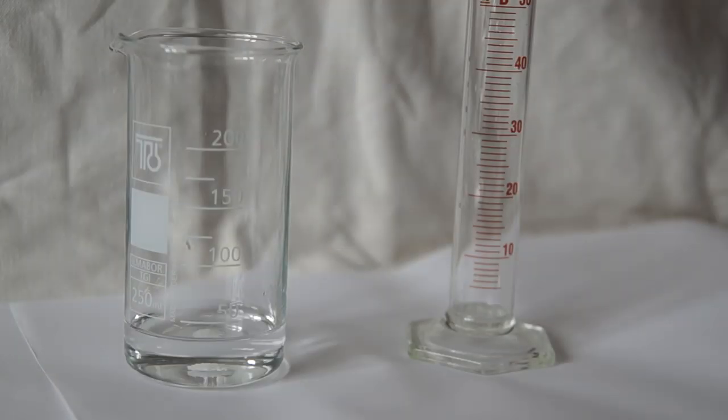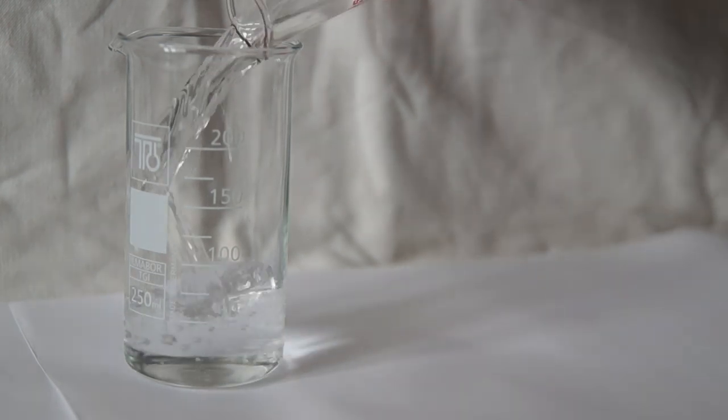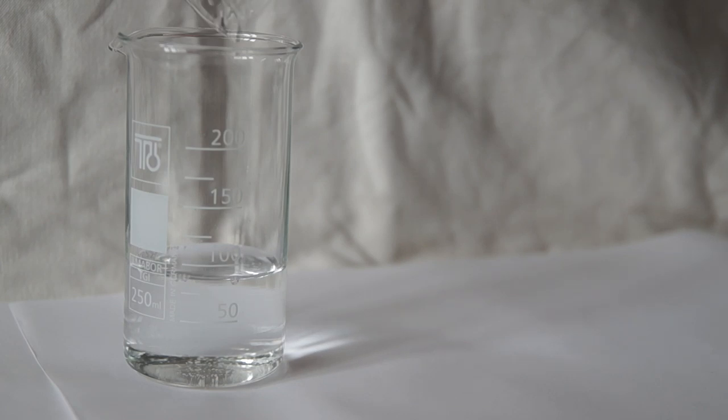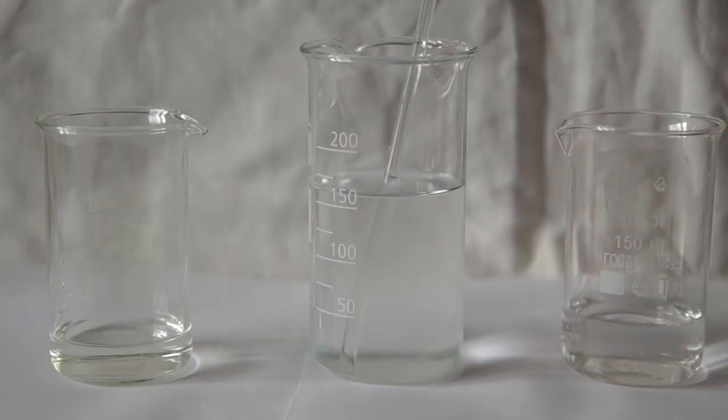Now in the second beaker which is filled with potassium iodate solution add another 120 ml of distilled water. It is also acceptable to spread that volume of water into all three beakers. Now we can conduct the experiment.